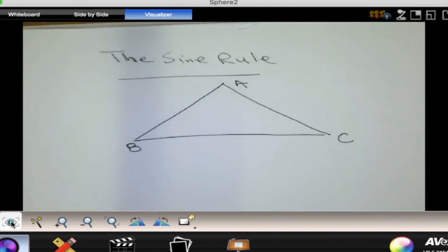Okay guys, so we know about the sine ratios in a right angle triangle. Sine of an angle is given by the opposite side divided by the hypotenuse.